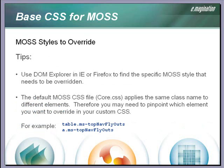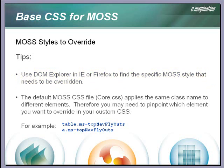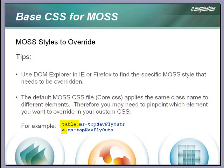Here are some tips for overriding styles from core.css. When you are trying to figure out the class name of a MOSS component that you need to override, you can use a DOM explorer such as the one found in the IE developer toolbar. View the site in a browser and use the select element by click feature to view CSS information for different elements in the page. This will give you the name of any MOSS default styles that you want to override. The default MOSS class names are often applied to different elements, meaning a table tag might be assigned the same class as an anchor tag in the code that is served up from MOSS. Therefore, you might need to pinpoint these elements when building out the classes in your own CSS file.